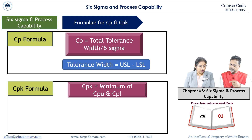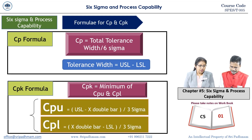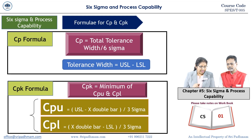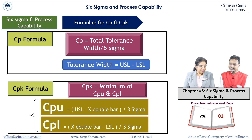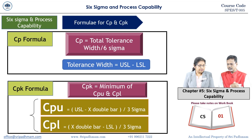CPK equals the minimum of CPU and CPL — the upper-side and lower-side process capability. CPU equals USL minus x-double-bar divided by three sigma, where x-double-bar is the process centering. Similarly CPL equals x-double-bar minus LSL divided by three sigma. These are specification limits, not control limits.